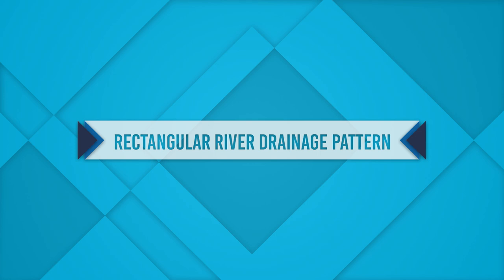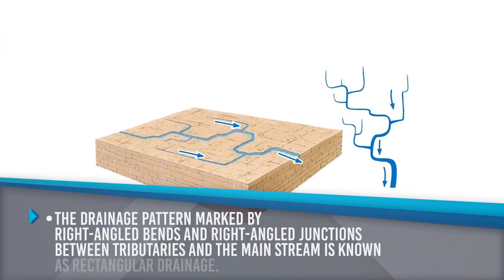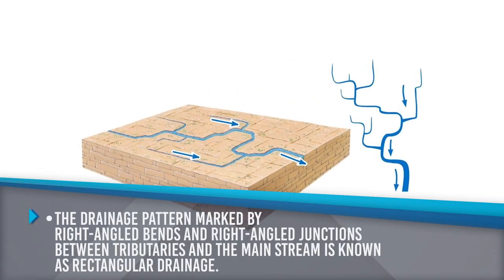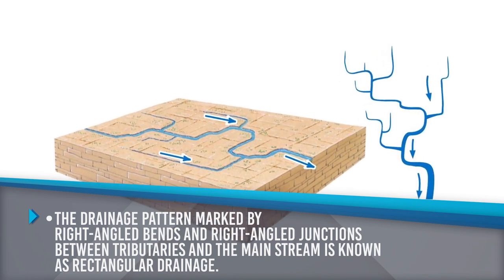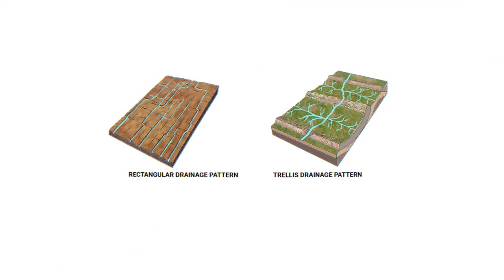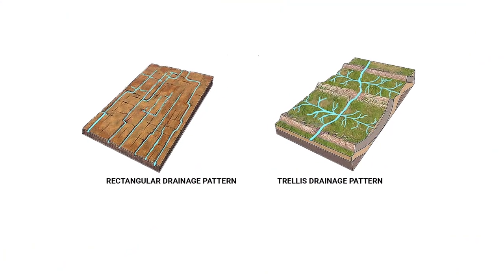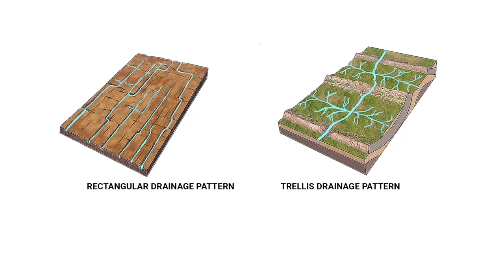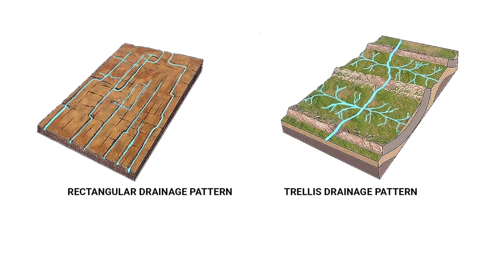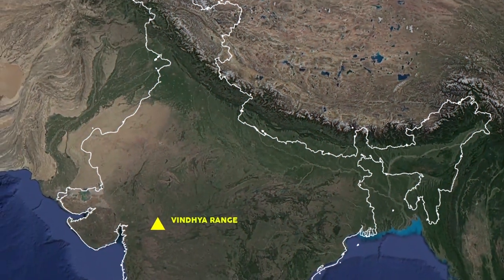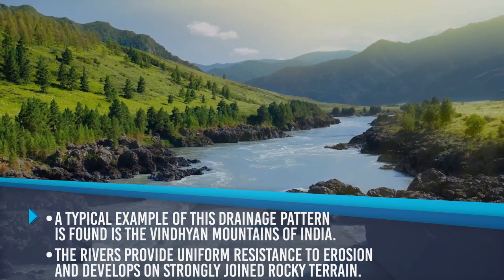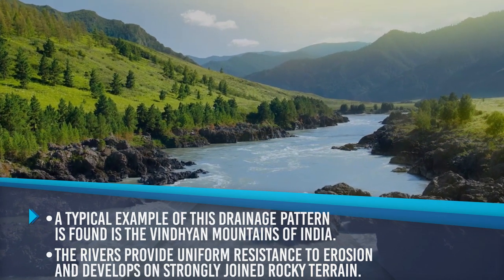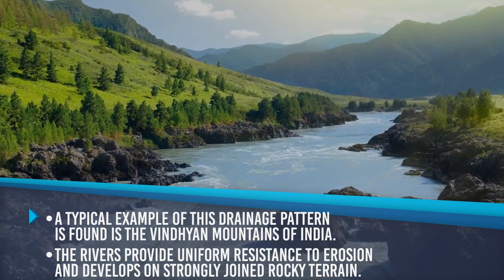Rectangular River Drainage Pattern: This pattern is marked by right-angle bends and right-angle junctions between tributaries and the main stream. It differs from the trellis pattern in that it is more irregular and its tributary streams are neither as long nor as parallel. A typical example of this drainage pattern is found in the Vindhyan Mountains of India. Rivers provide uniform resistance to erosion and develop on strong jointed rocky terrain.